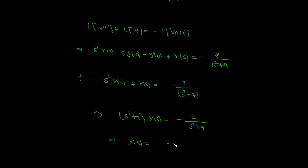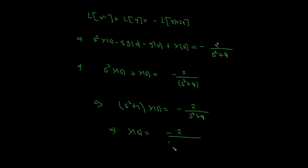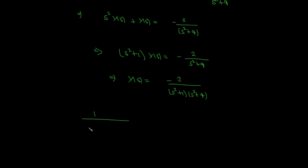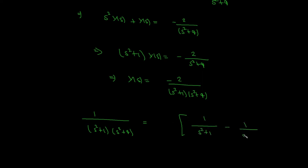Therefore Y(s) equals negative 2 over (s squared plus 1)(s squared plus 4). By using partial fraction decomposition, 1 over (s squared plus 1)(s squared plus 4) equals one third times (1 over s squared plus 1 minus 1 over s squared plus 4).